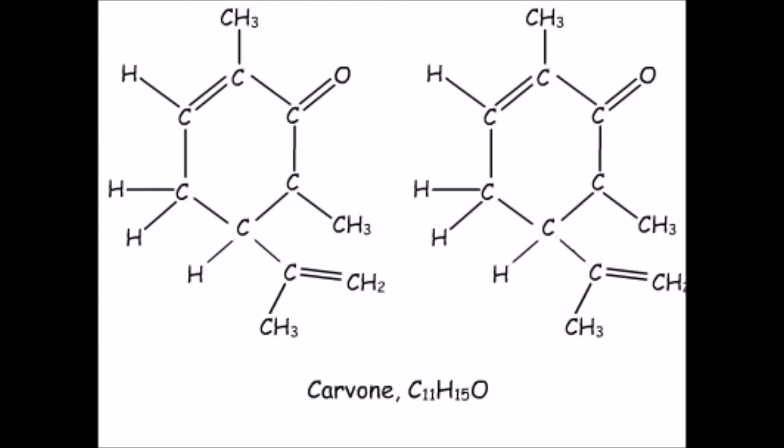The mirror image isomers of carvone are shown here. In the structure on the left, the hydrogen atom comes out of the plane and the carbon chain goes into the plane. The opposite is true for the structure on the right.